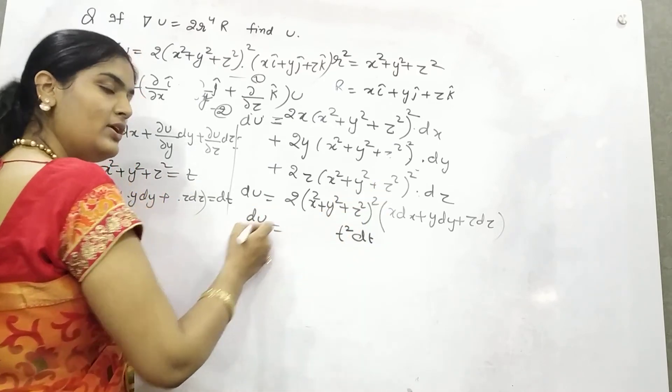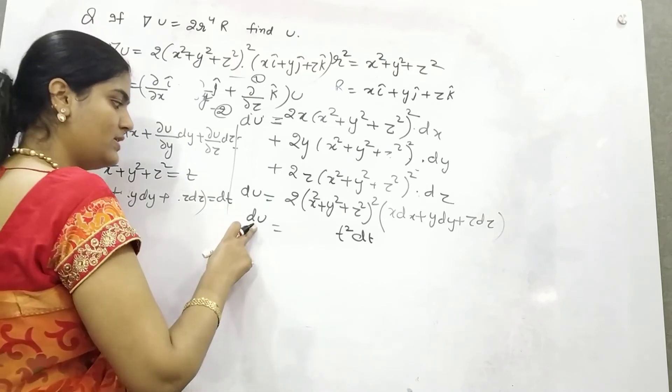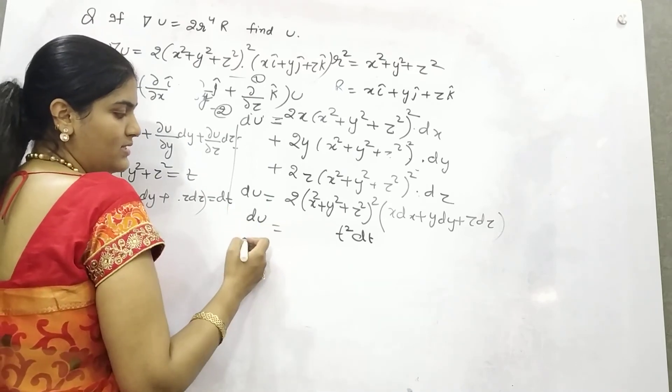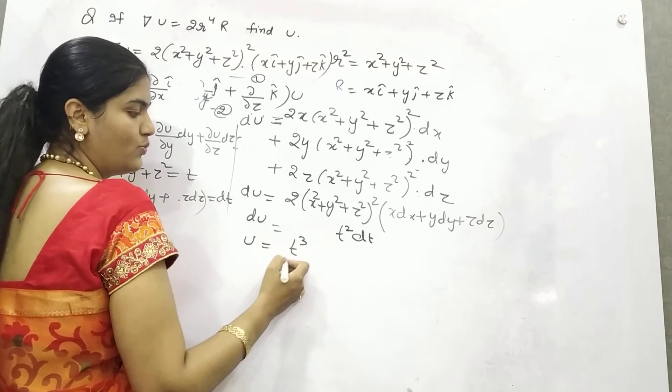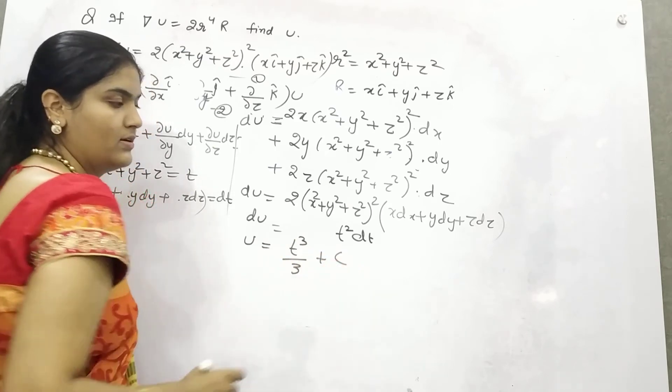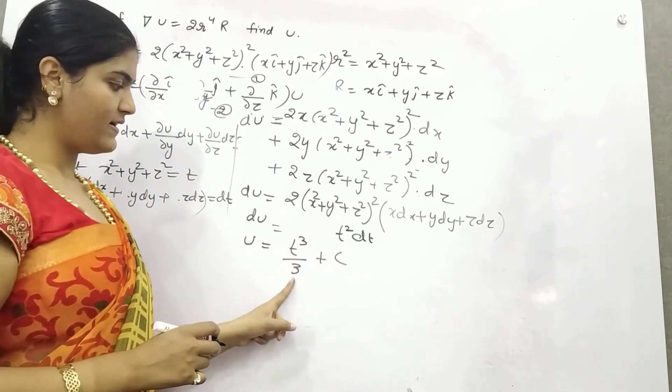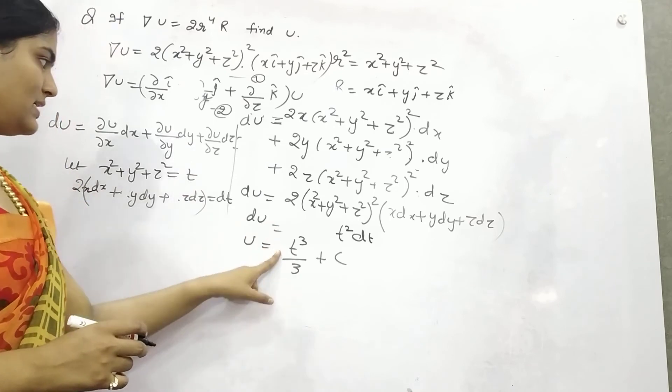Take 2 common, so 2(x·dx + y·dy + z·dz) is your dt, and this x² + y² + z² is your t, so t². This is your du. Now you can integrate it. If you integrate both sides, u will be t³/3 + c.